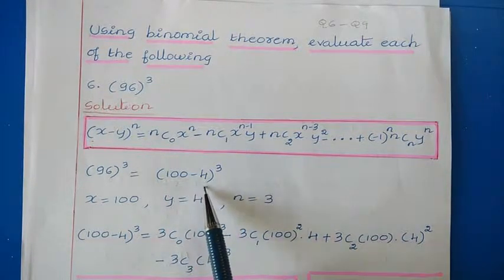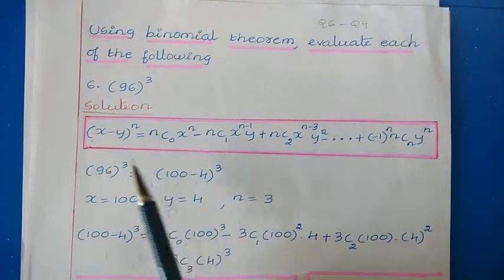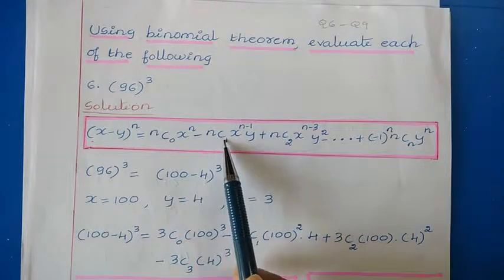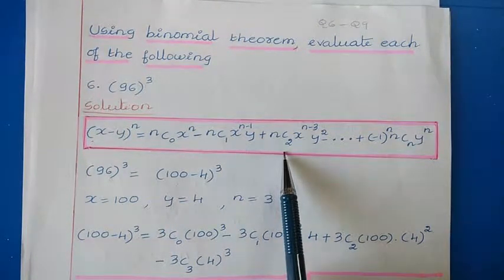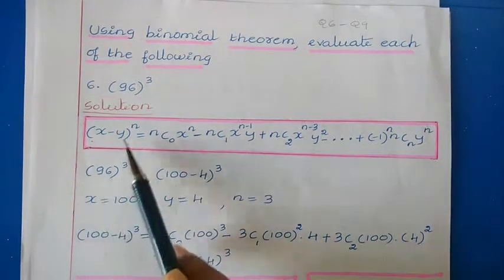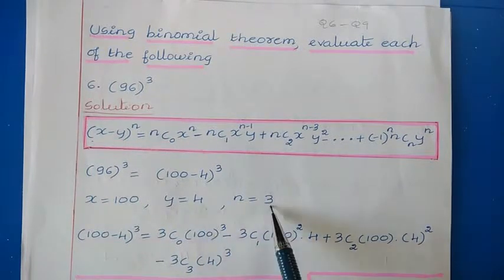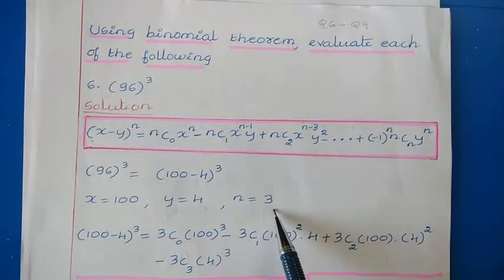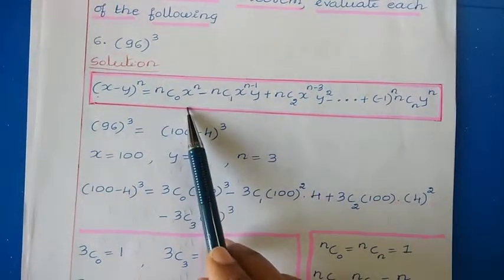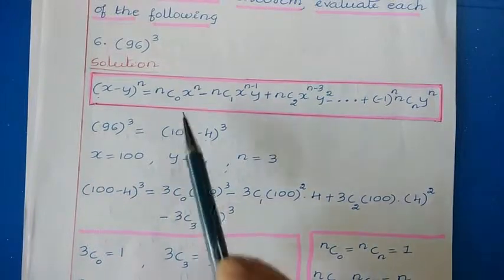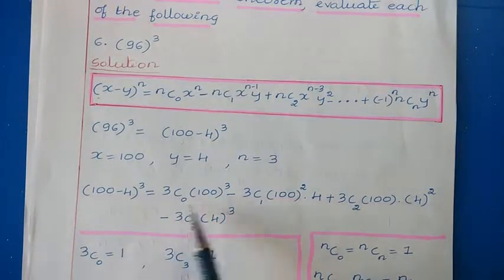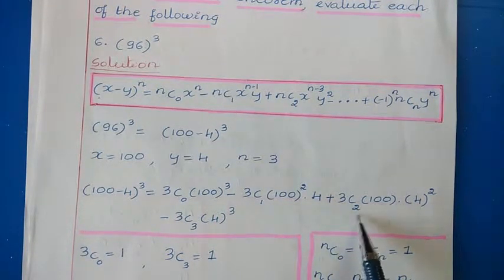Now here we have two variables, so we can find the x value as well as y value. Since we have a negative sign, we use the binomial theorem for negative values. So x is 100, y is 4, and n is 3. To write the expansion we start from 3c0 and go up to 3c3.